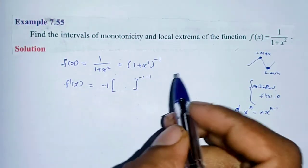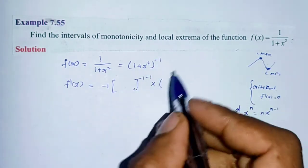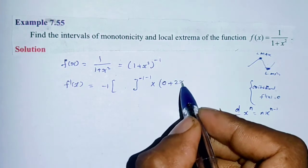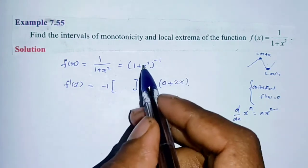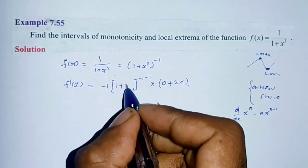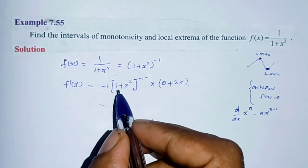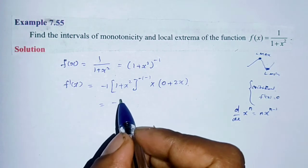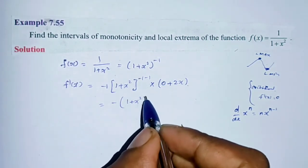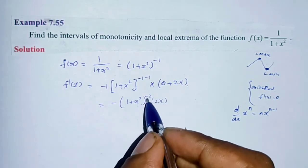Next, we multiply by the derivative of the inner function (1 + x²). The derivative of 1 is 0, and the derivative of x² is 2x. So f dash of x equals minus 1 into (1 + x²) to the power of minus 2 into 2x, giving us f'(x) = -2x divided by (1 + x²) squared.